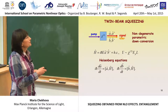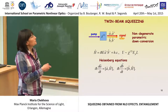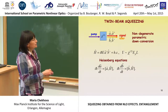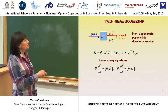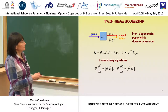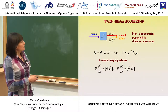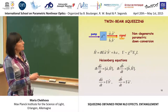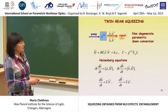Now I move to twin beam squeezing. For non-degenerate parametric down conversion, signal and idler are of different color, angle, or polarization. I introduce operators A† for the signal mode and B† for the idler mode. The Hamiltonian contains two different creation operators. The Heisenberg equations for A and B modes are exactly the same structure as for the degenerate case.